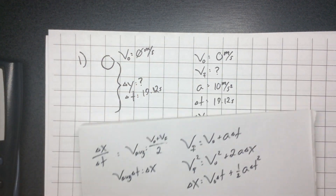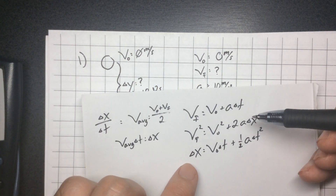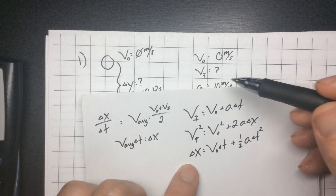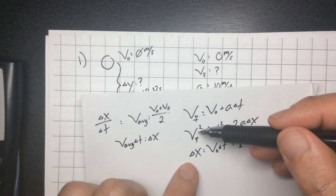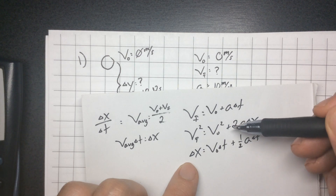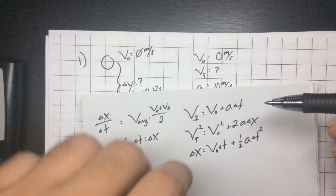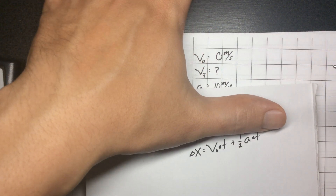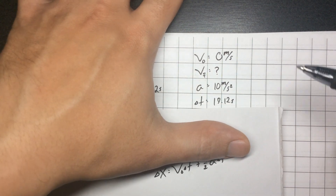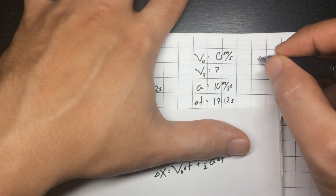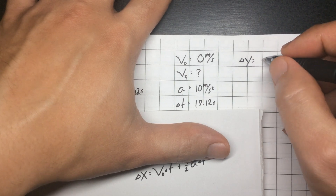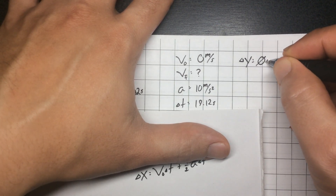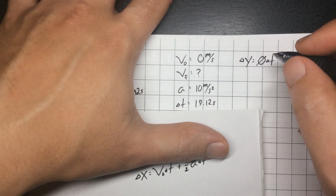Looking at this again, we want the change in position. Of these equations, two have it. I notice I don't have the final velocity — this equation requires final velocity to solve and I don't have it. So that tells me I'm just going to use the third equation. My change in position y equals my initial velocity, which is zero, multiplied by time — so that all goes away.